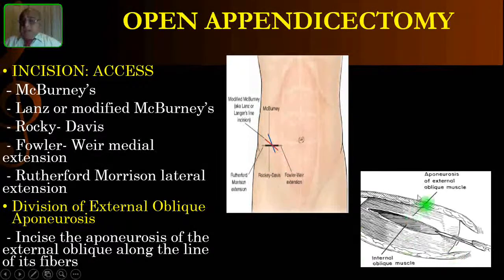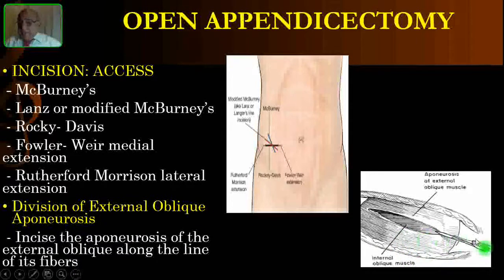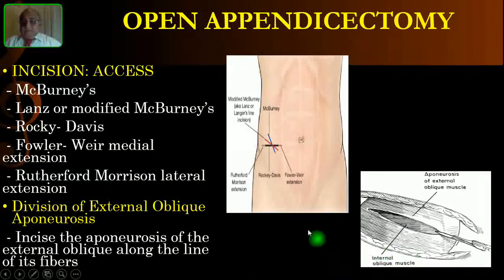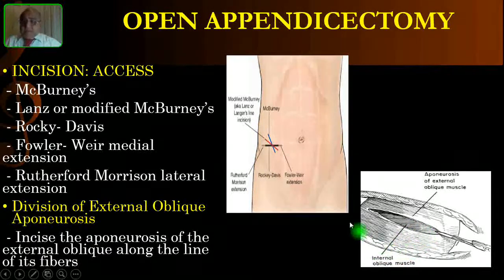After the skin incision and cutting the subcutaneous fat, you will see the underlying glistening fascia — this is the external oblique aponeurosis. The medial part is aponeurotic while the lateral part will be muscular. You have to incise this along the line of its fibers. Just beneath that you will see two muscles.